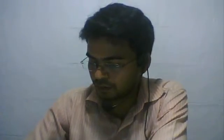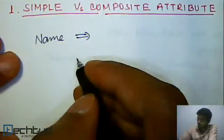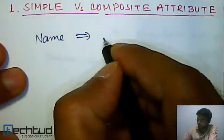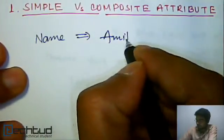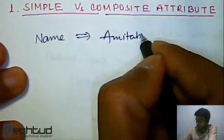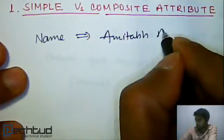The first one is simple attribute. Let's try to understand it with an example. Consider the name 'Amitabh Bachchan'.